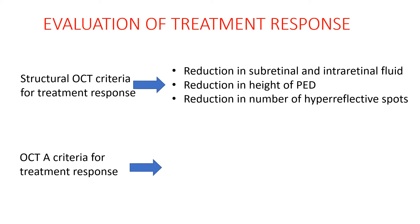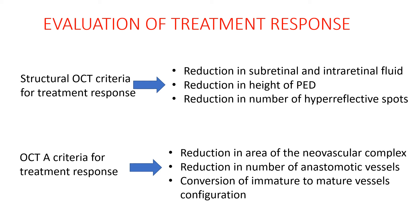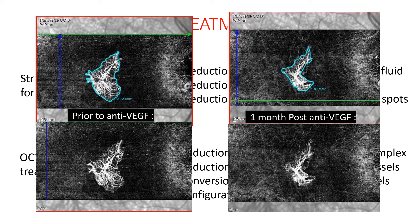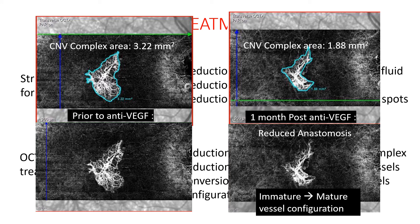OCT angiography criteria for treatment response were: reduction in area of neovascular complex, reduction in number of anastomotic vessels, and conversion of immature to mature vessel configuration. Here we can see the first image is prior to anti-VEGF injection where the CNV complex area is 3.22 mm². One month after anti-VEGF injection, there is reduction in the area of CNV complex, as well as evident reduction in anastomosis and conversion of immature to mature vessel configuration.